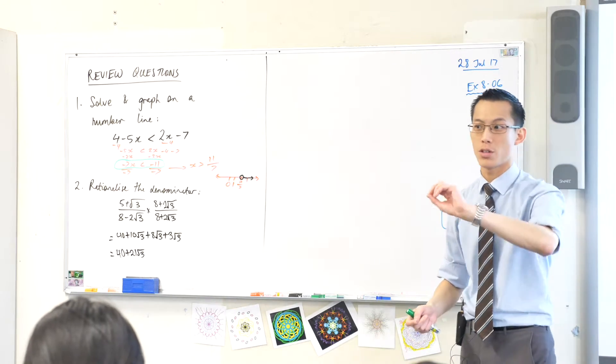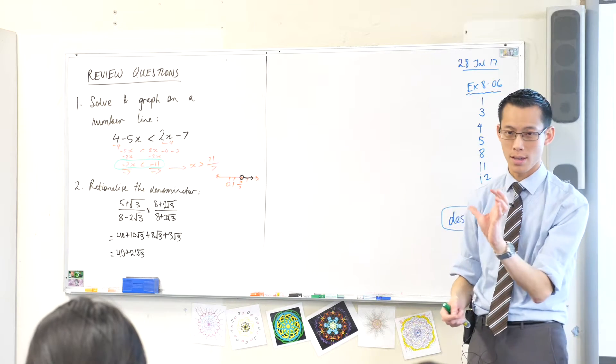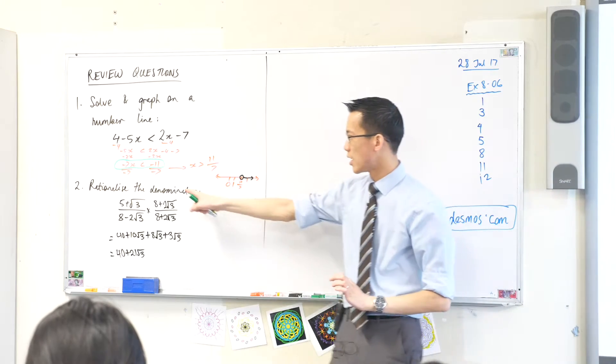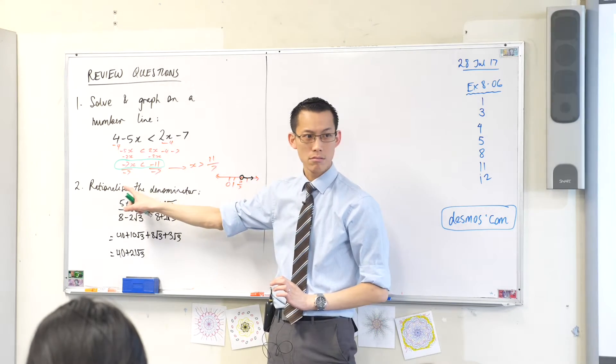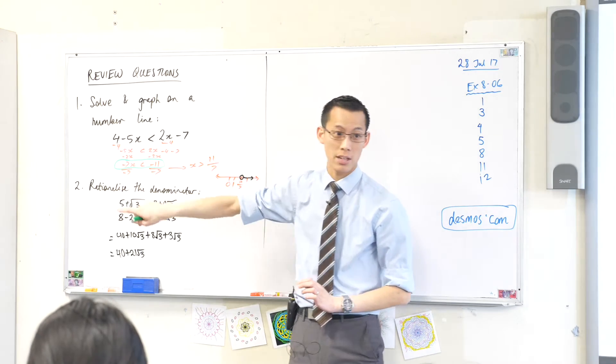Now he does one last thing, and this shows one of the differences between inequalities and equations. What's he done? You can see it underneath here. He has division by negative 7.